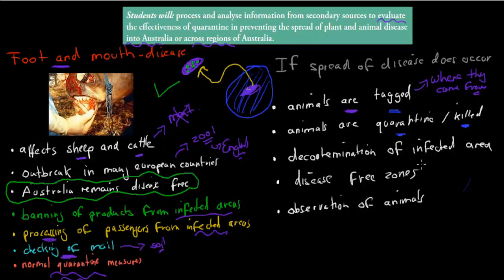There is decontamination of infected areas - if an area is found to be infected, there will be pesticides applied and burning of things which might be infected, just to make sure any disease present is killed. We also establish disease-free zones, like we did with the Queensland fruit fly. These disease-free zones make sure that disease stays out of those zones. There are special measures in place, such as fines and border control, to make sure disease doesn't enter these pockets of Australia that remain disease-free.